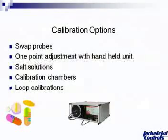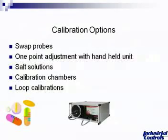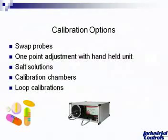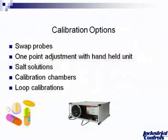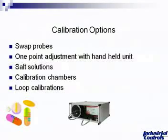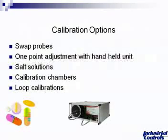So how do you calibrate in the field? A very easy way would be to have a calibrated probe swap — take a probe from your stock that's been freshly calibrated, pop the old one off your transmitter, put the new one on, and there's no further adjustment necessary. You can also do, on rare occasions, a one-point adjustment with handheld units. That's not a true calibration, but it gives you a little better accuracy at your critical points.